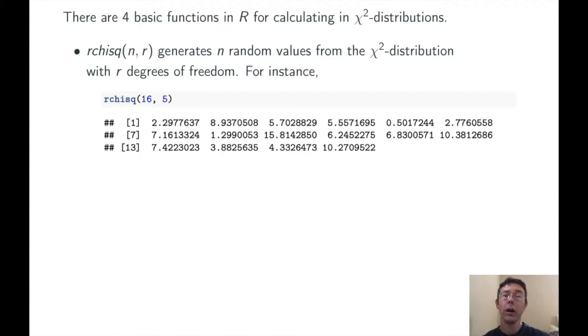For instance, rchisq of 16, 5 generates 16 random values from chi-squared of 5.